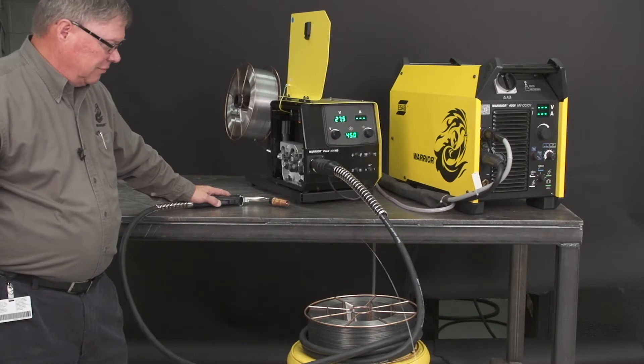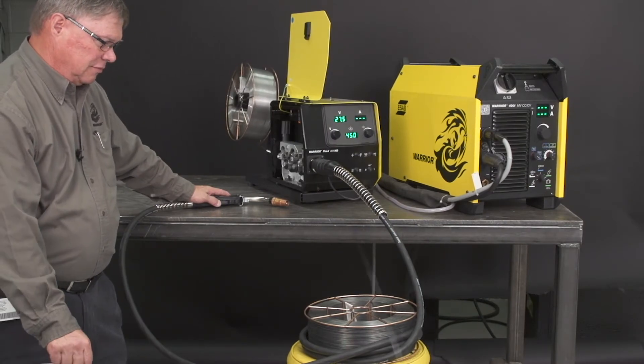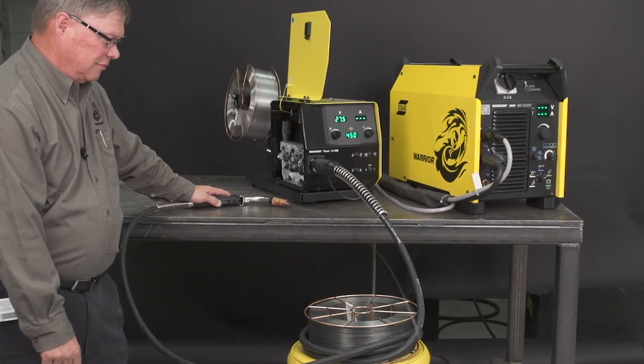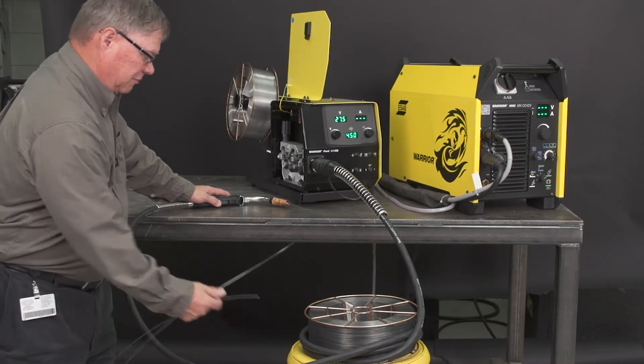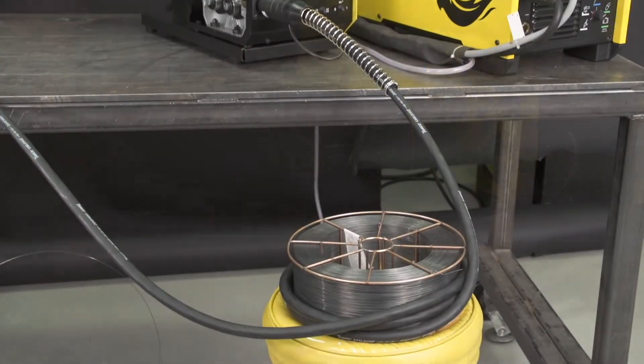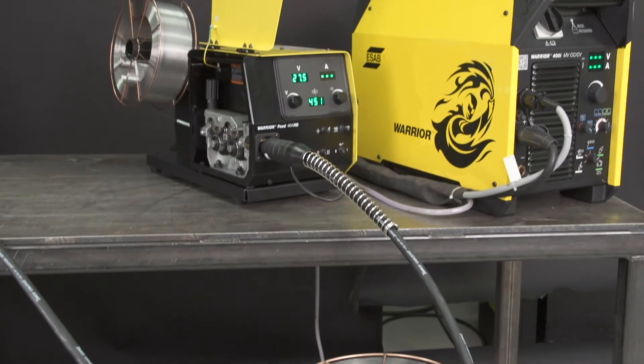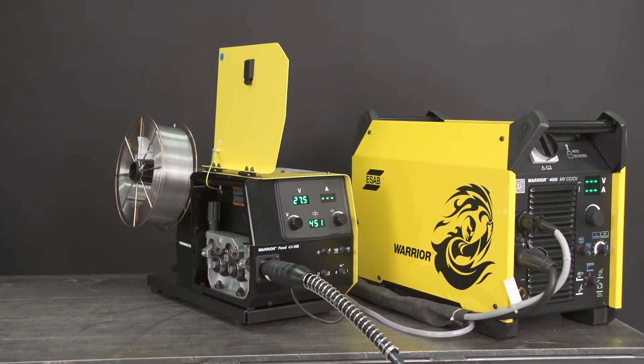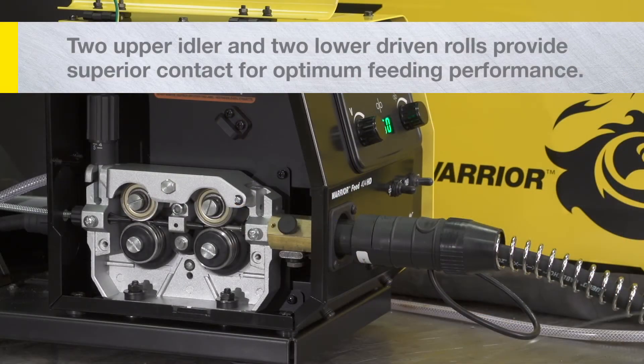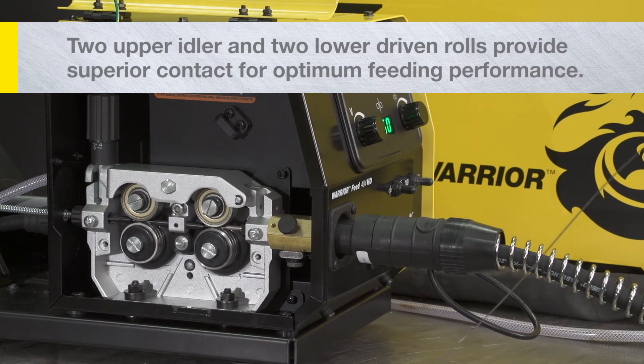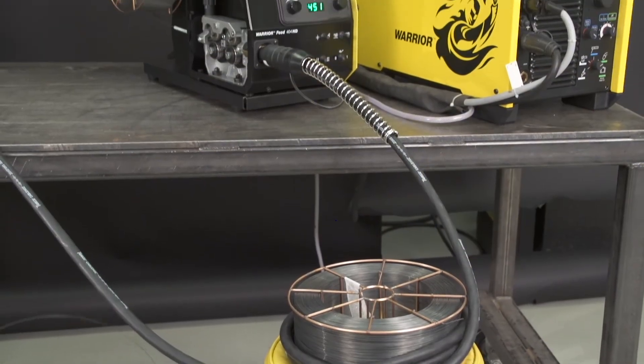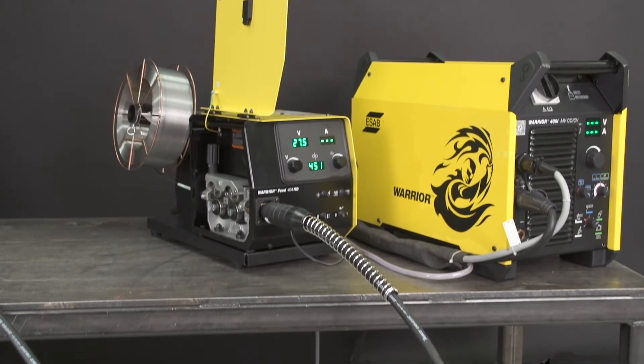As we all know, in typical welding applications the welder almost never keeps the cable hose assembly completely straight, so you have to have a wire feeder that has the power to deal with the cable hose being wrapped around various things, twisted, and it's a challenge. The Warrior Feed 404HD has the power to deliver wire to your arc.